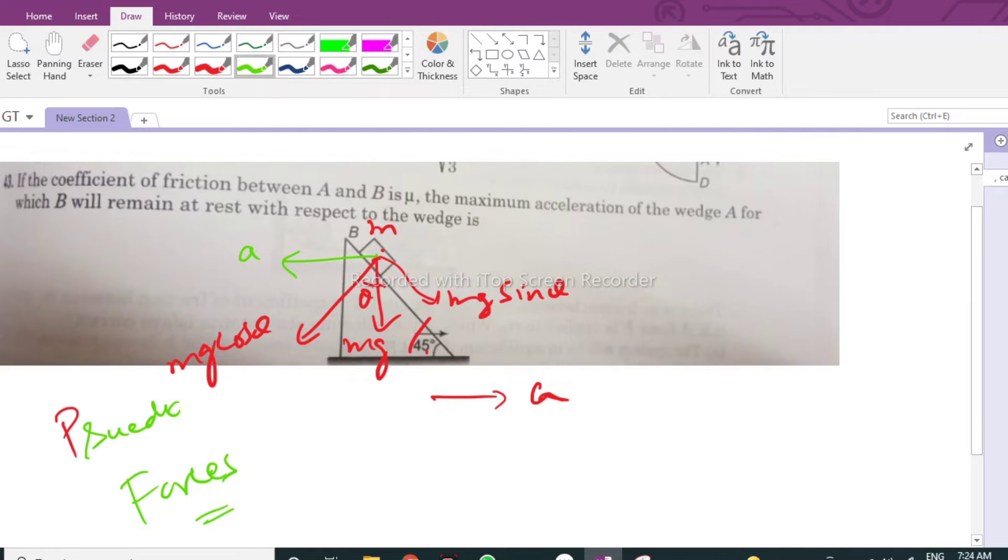In that context, I have to apply imaginary acceleration in the left direction so this block will come into a static problem. Now we have to see what are the components of acceleration here. This is a cosine theta, so for the mass the force will be ma cosine theta.